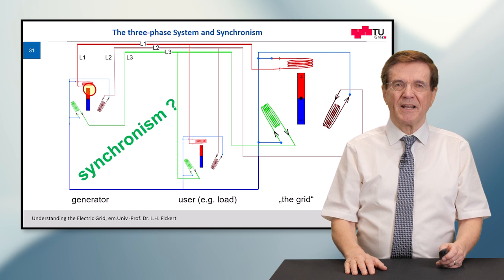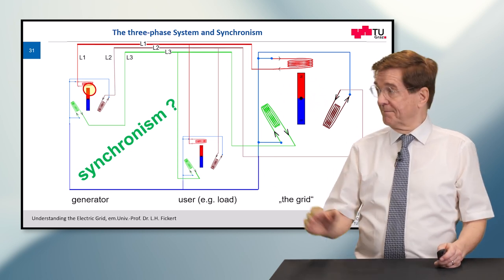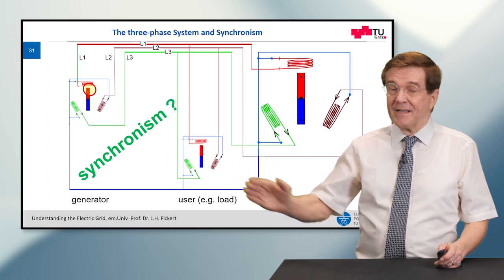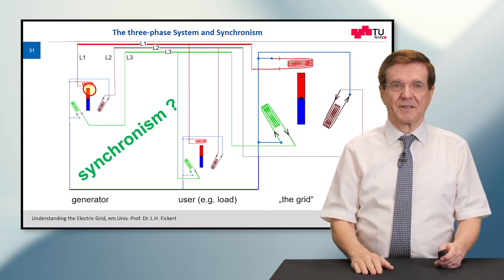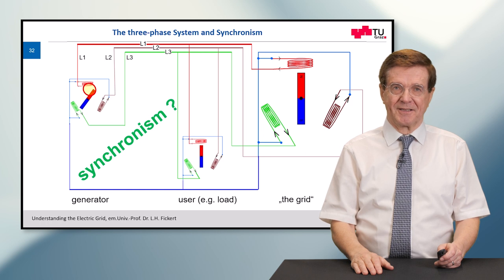But now what happens if one generator, our generator to the left side, you see it here, wants to get out of synchronism? For example, it moves forward. And now I tell you a secret.